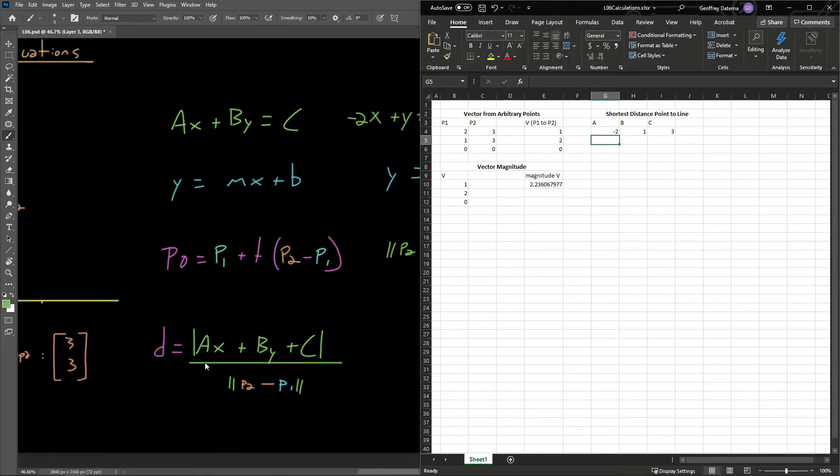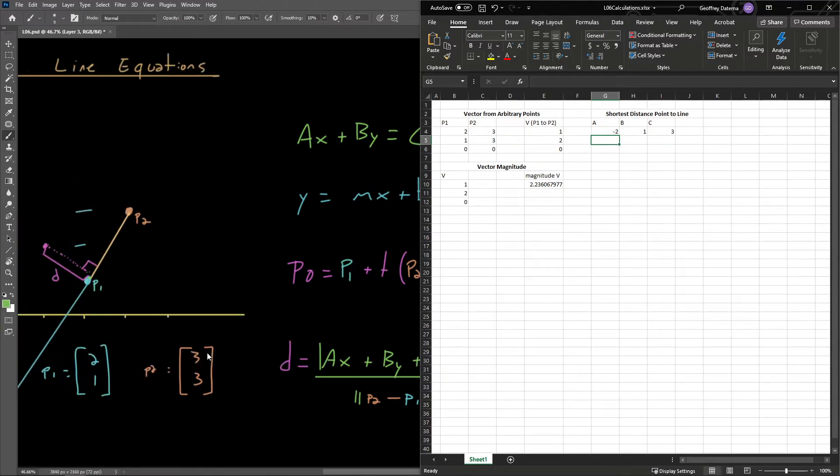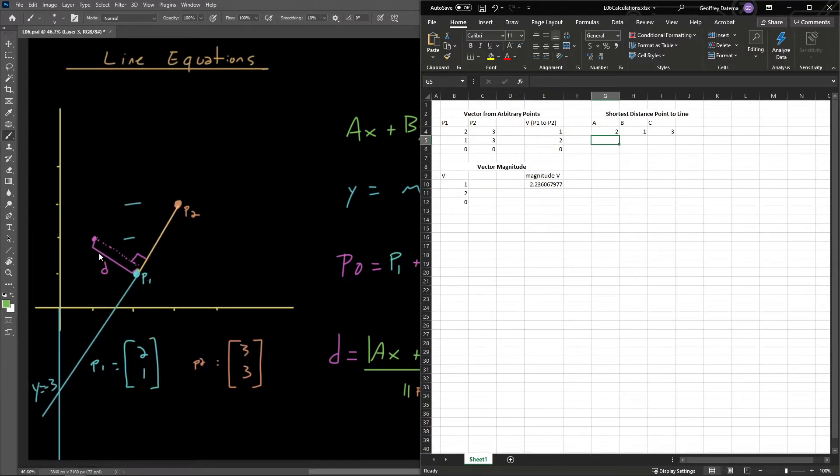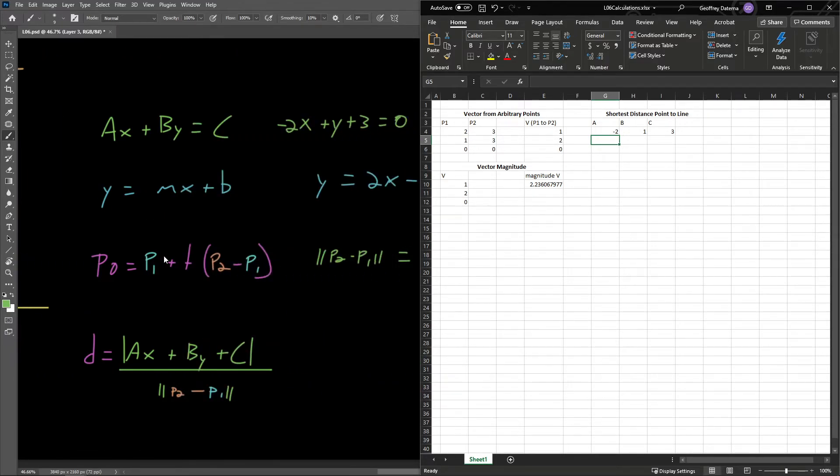We're also going to need X and Y here, which are the X and Y components of this point, some arbitrary point in space that we're trying to figure out how far away from the line it actually is. So let's test the point 1, 2. So X is equal to 1, and Y is equal to 2.